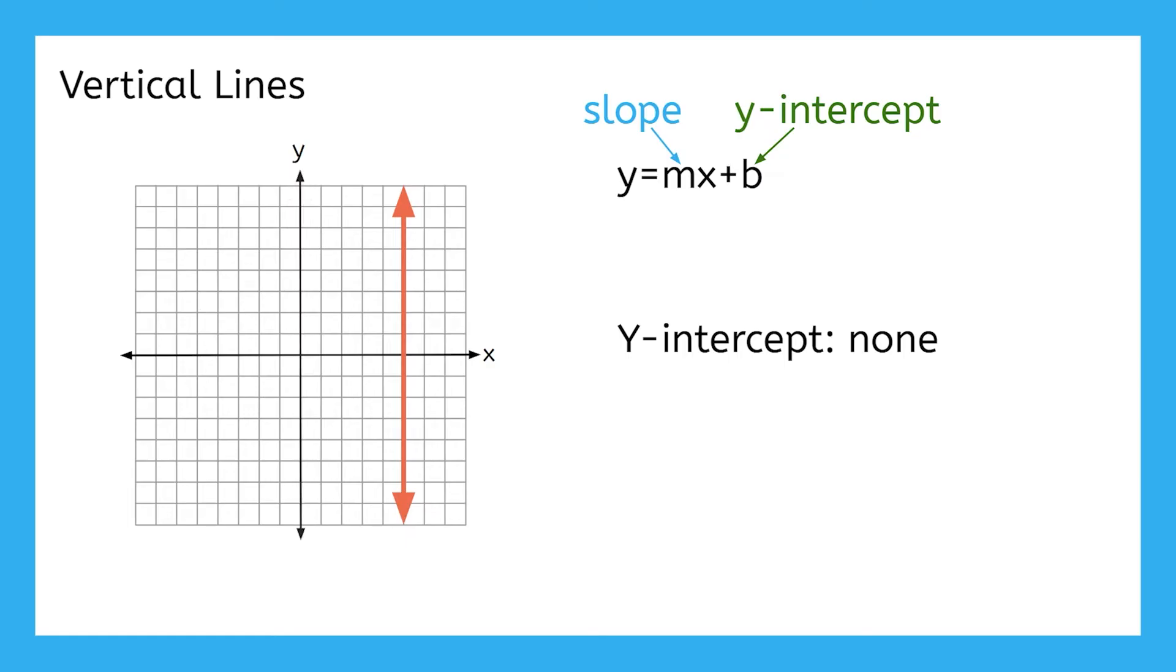The second issue is that while it has a slope, the slope is just undefined. Even if I had a y-intercept, what would that equation look like? I certainly can't write it as y equals undefined times x. That just doesn't make any sense. So with no y-intercept and no numerical slope, I think it's clear that we can't use slope-intercept form for a vertical line.